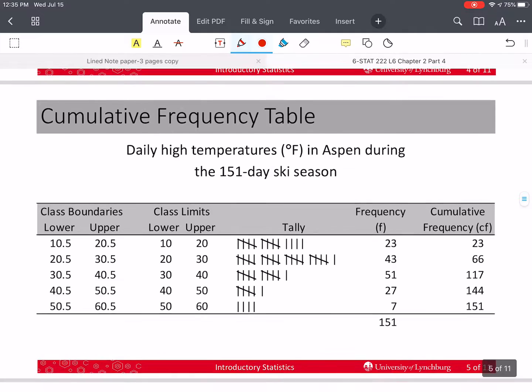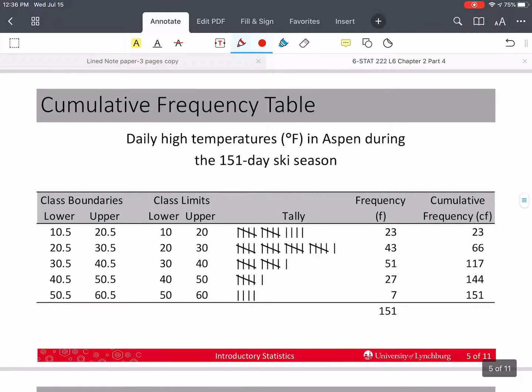All right. If we plot this on a line graph, it's going to be called an ogive. So this is for the daily high temperatures in Aspen, Colorado, during the 151-day ski season. So as we did last time, we would use the data to calculate our class boundaries and our class limits, and we'd tally the individual values and find the frequencies.